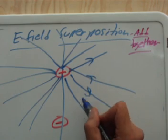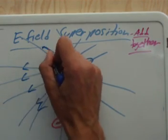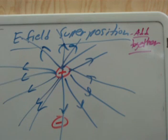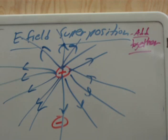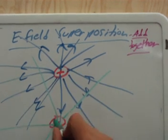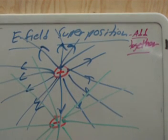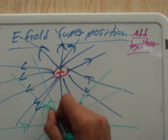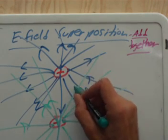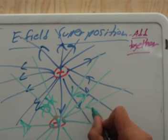The field lines from the positive charge all point away from it. The negative charge is there too, and just like the positive charge has its field lines, so will the negative charge, filling all the space around it. All the space around this negative charge is filled with electric field lines, and they're going to point inwards.